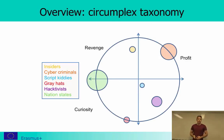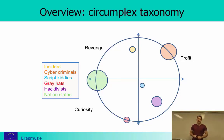Looking at the overview: insiders are a small group working either for revenge or profit. Cyber criminals are a large group mainly interested in profit. Hacktivists are more driven by curiosity, political goals, or recognition. Script kiddies are the smallest group — the guy sitting in a basement, drinking cola, eating pizza and trying things they read online. Greyhats are again more for curiosity and recognition. And there are nation states, which are usually countries spying on each other for curiosity or revenge.